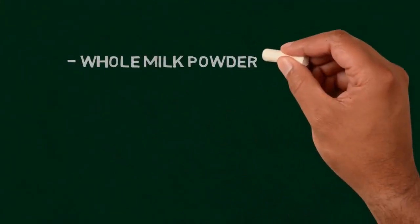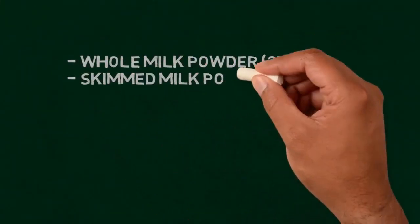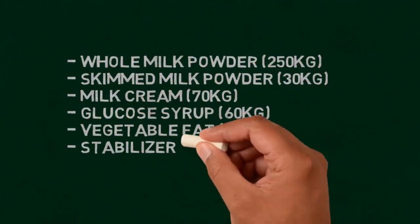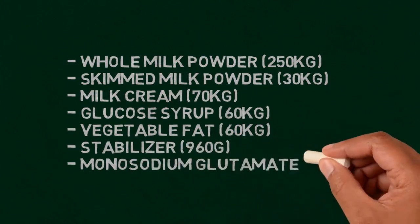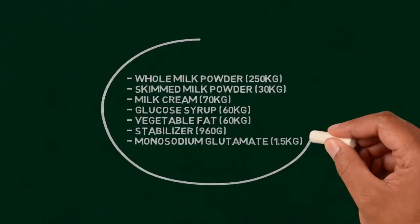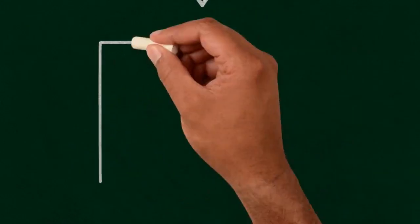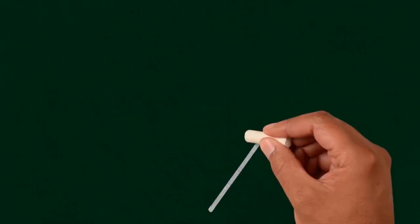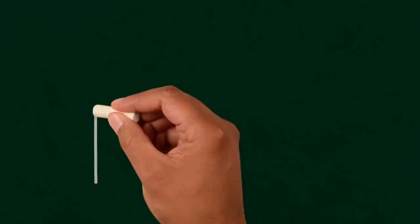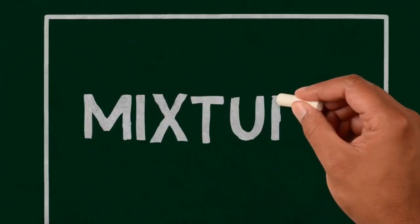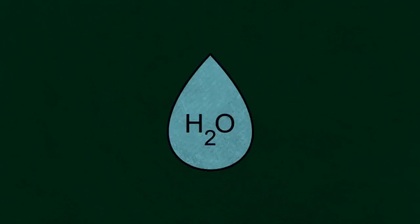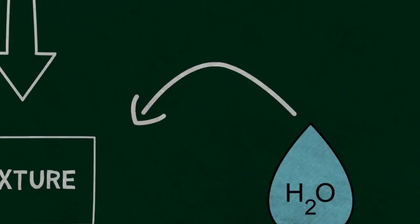First, let's assume the following raw materials of an industry. These will be weighed according to the recipe and then mixed in a common storage tank with the addition of 1,260 liters of water.